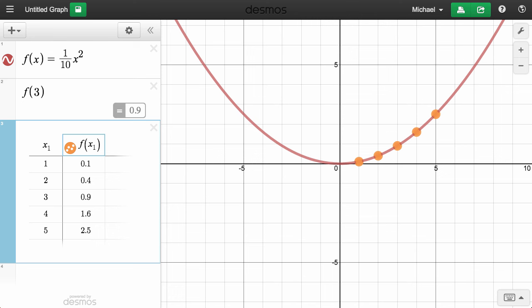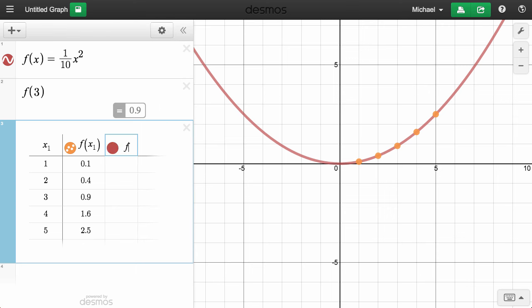Naming functions can be particularly helpful when exploring transformations, whether complex ones or simple ones like translating this parabola up one unit. To do so, just add a third column in our table with this header, f(x)+1.